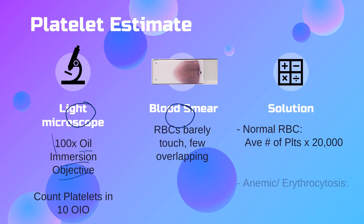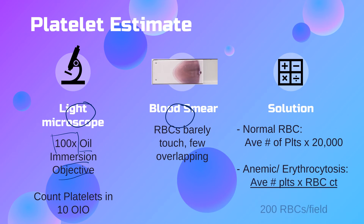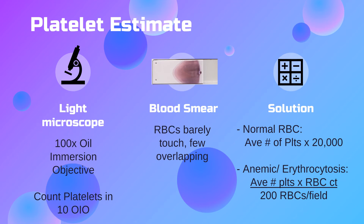The platelet estimate uses a light microscope with the oil immersion objective at 100× magnification. We count all platelets seen in 10 oil immersion fields. The blood smear site for counting should be chosen properly — red blood cells should barely be touching each other with only few overlapping.